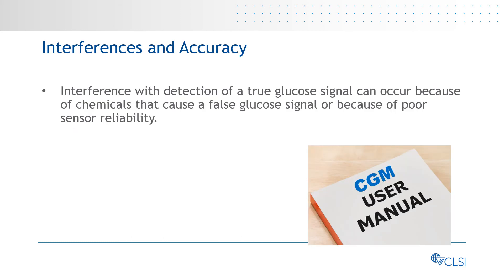Interference with detection of a true glucose signal can occur because of chemicals that cause a false glucose signal or because of poor sensor reliability. Therefore, testing should be performed for sensor-specific physiologically occurring substances, exogenous substances and drugs, as well as for poor sensor reliability, all of which can affect the accuracy of these devices. It's important to recognize the presence of these factors when assessing the accuracy of a CGM system.